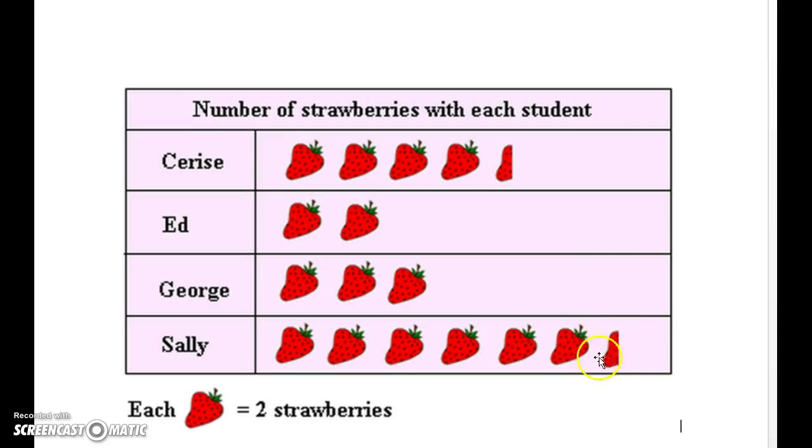Half a strawberry picture means they had one strawberry. So Sally had two, four, six, eight, ten, twelve, thirteen strawberries.